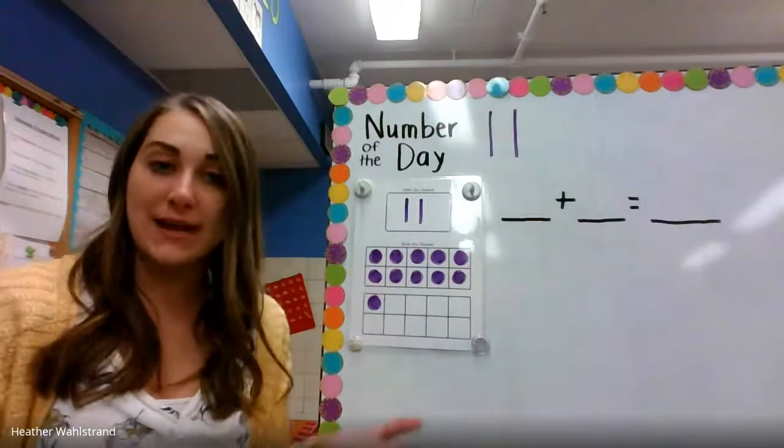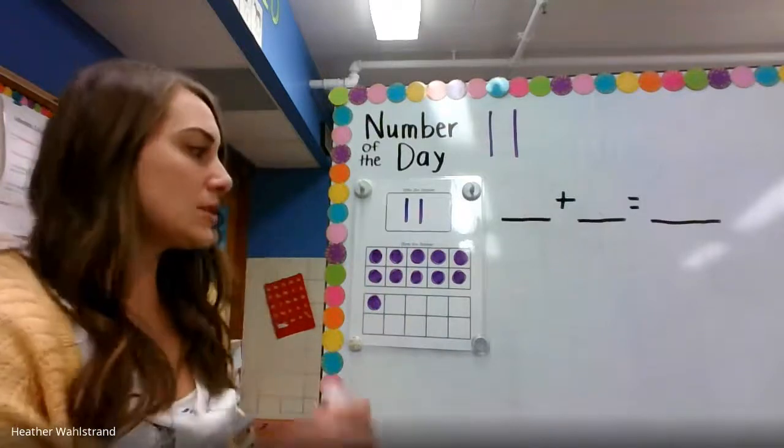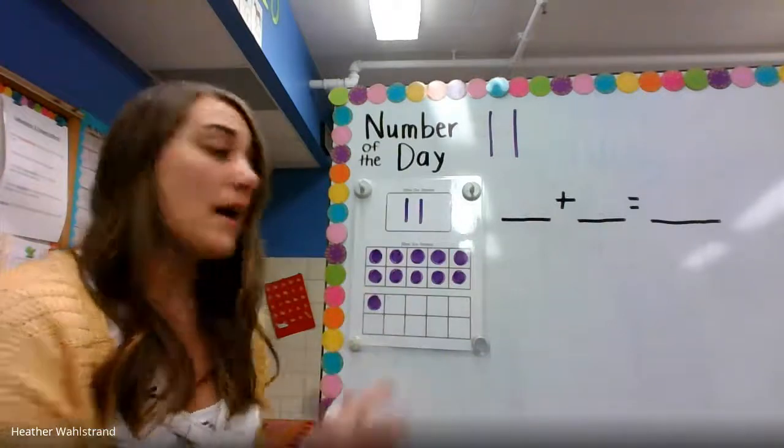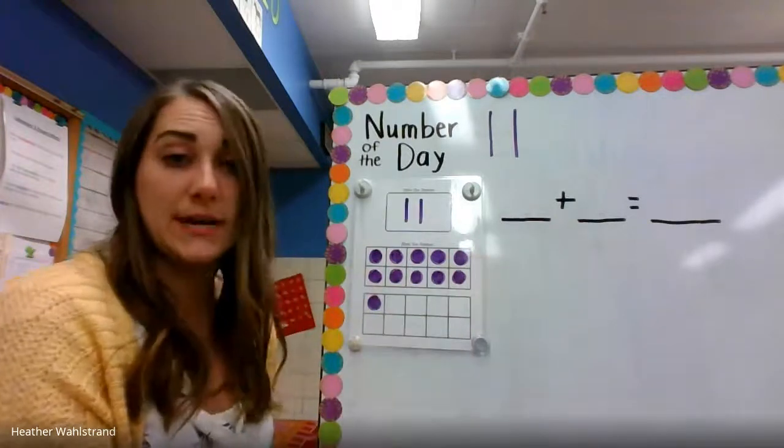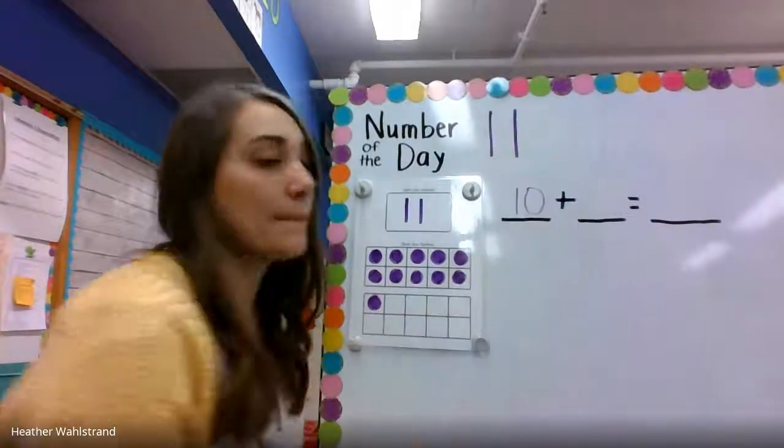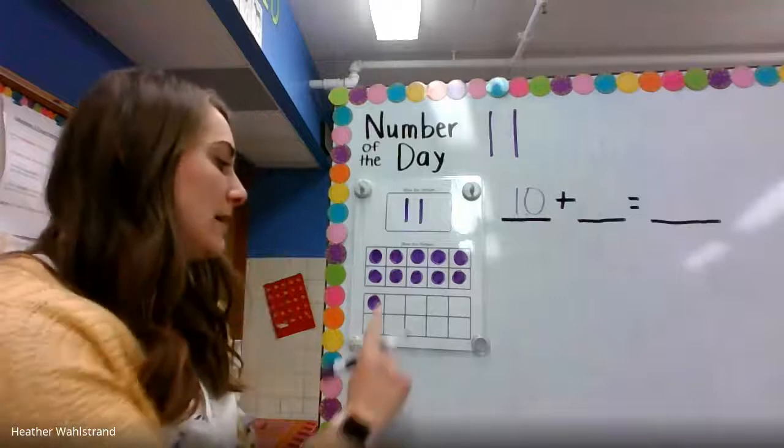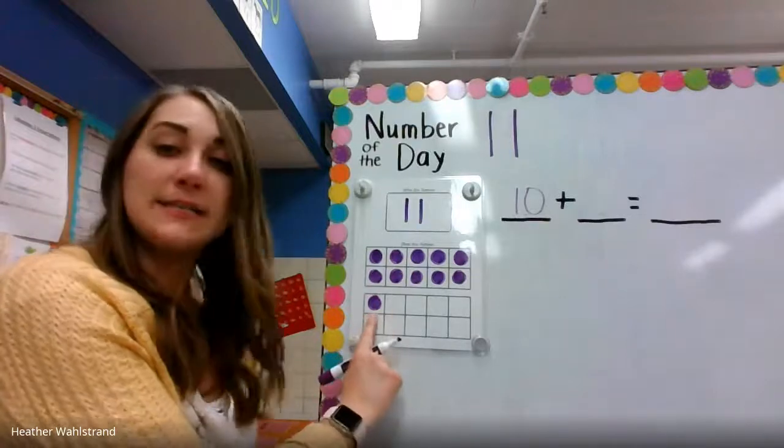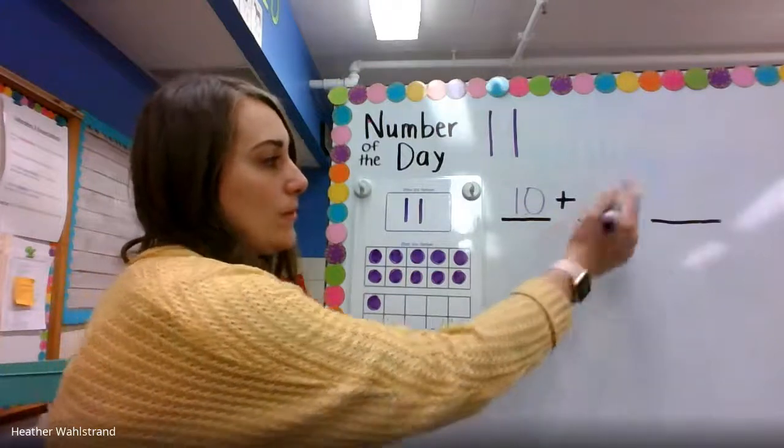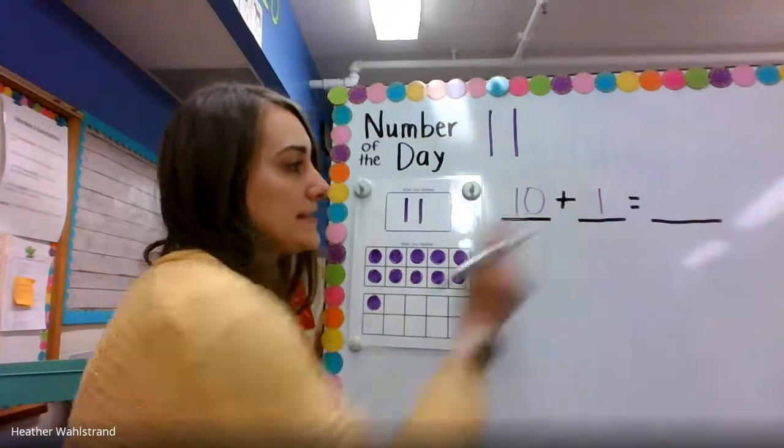We can show that as an equation, too. If I look at my 10 frame, I see my group of 10. Every spot in the first 10 frame is full. So, on this line, I'm going to write the number 10. On the second 10 frame, I see one extra one. So, on my equation, I want to write a number one on the second line.